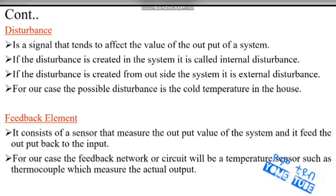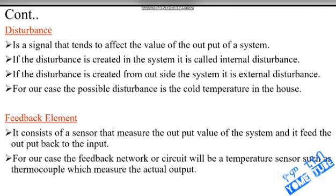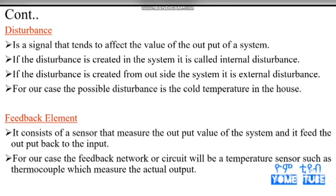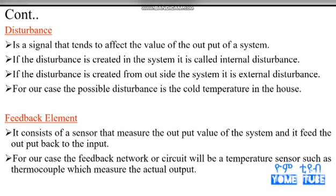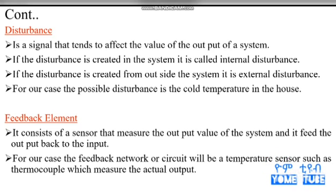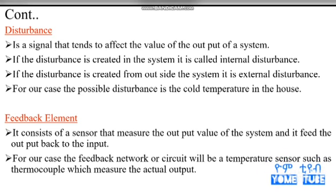Disturbance. The system is at the set point — the desired point is the set point. Disturbance is a signal that tends to affect the value of the output of the system. If the set point is not a disturbance, it is a disturbance. The disturbance can be external and internal.